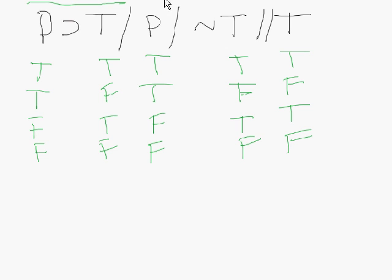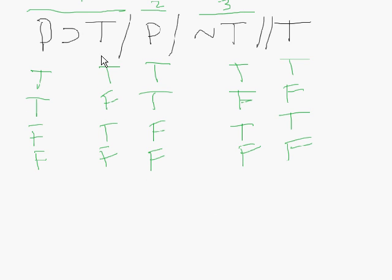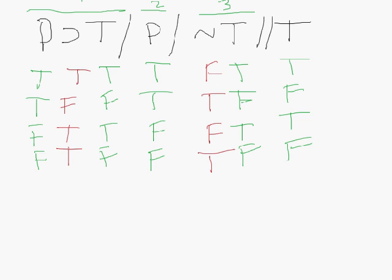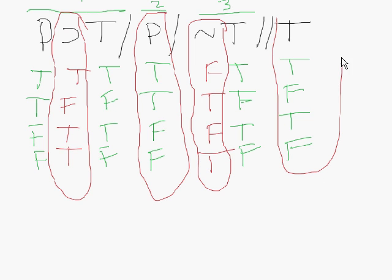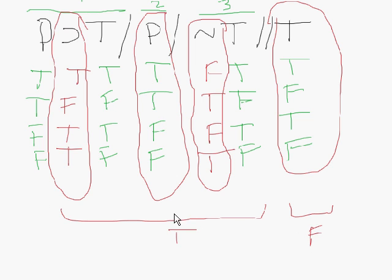In this case, I have three premises: premise 1 is the conditional P therefore T, premise 2 is P alone, and premise 3 is the negation of T. The main operator of premise 2 is already done since there's only one element. Changing color to red, the main operator values for the conditional give us: true, false, true, true, false, true, false, true. The lines I need to evaluate are the columns under the main operators for the premises and the conclusion.